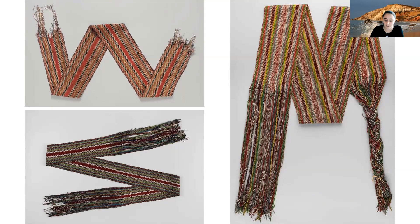The Iroquois, or Haudenosaunee, are an indigenous confederacy in northeast North America — known to the French as the Iroquois League and to the English as the Five Nations, comprising the Mohawk, Onondaga, Oneida, Cayuga, and Seneca. Like the other sashes shown here, this one is made of wool and has been finger-woven. It features colors of yellow, red, green, and black, woven in a zigzag chevron pattern, and would have had long fringe hanging from either end.